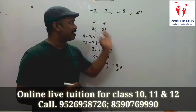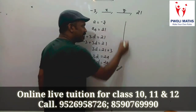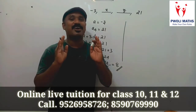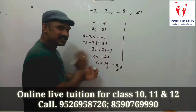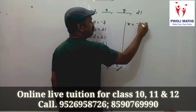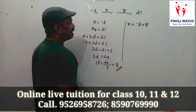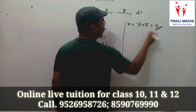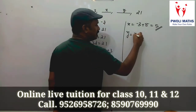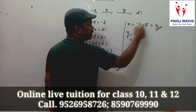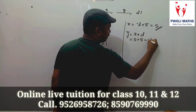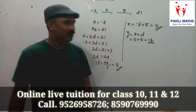D equals 8. Now, x is the second term: first term minus 3 plus common difference 8 equals 5. So x equals 5. And y is the third term: x plus d equals 5 plus 8 equals 13. So y equals 13. Therefore x equals 5 and y equals 13.